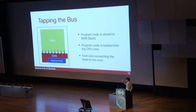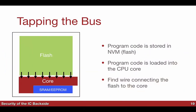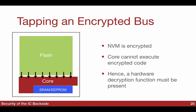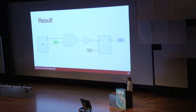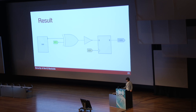Wir müssen uns merken: wir haben den Flash und die Daten gehen in den Core. Irgendwo zwischen Flash und Core können wir die Kabel finden. Das ist der Fall, wenn man unverschlüsselte Daten auslesen möchte. Wenn sie verschlüsselt sind: die CPU kann keine verschlüsselten Daten ausführen — also muss irgendwo eine Entschlüsselungsfunktion geben. Mit einem XOR und einem anderen Input kommt der Verschlüsselungsfaktor rein. Aber rechts kommen unverschlüsselte Daten raus. Man kann diesen Prozess natürlich auch automatisieren.